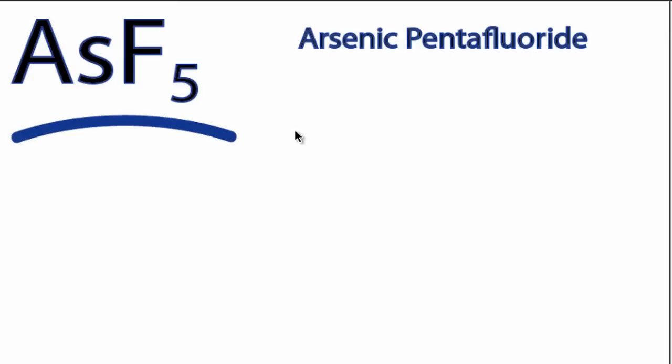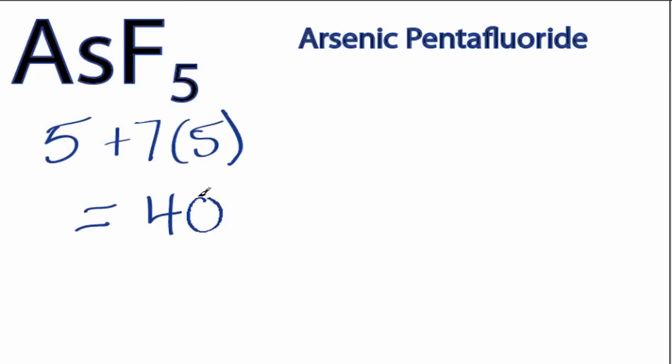This is the AsF5 Lewis structure. Arsenic has 5 valence electrons. Fluorine has 7. We have 5 fluorines, so 5 plus 35, a total of 40 valence electrons for the AsF5 Lewis structure.